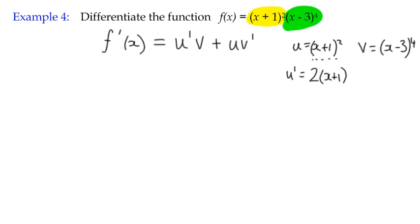For v', same idea. v' is equal to 4(x - 3). Now, remember I have to reduce the power by 1 to the power of 3, multiplied by the derivative of the term inside the bracket, which again happens to be 1, so I don't need to multiply anything into that.